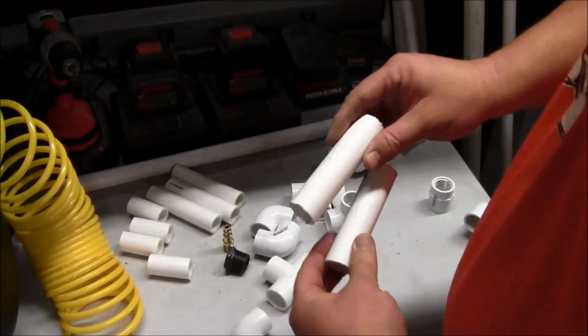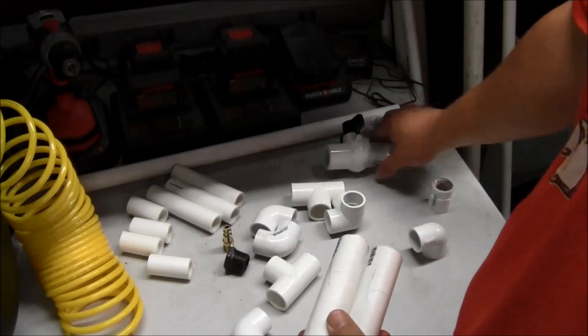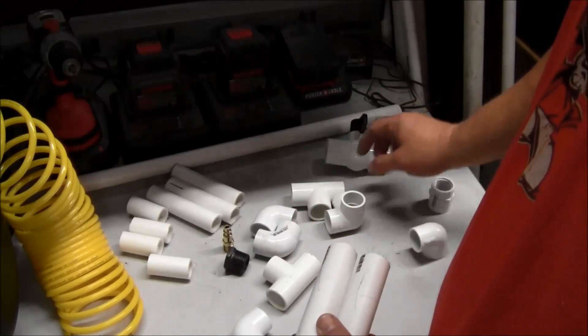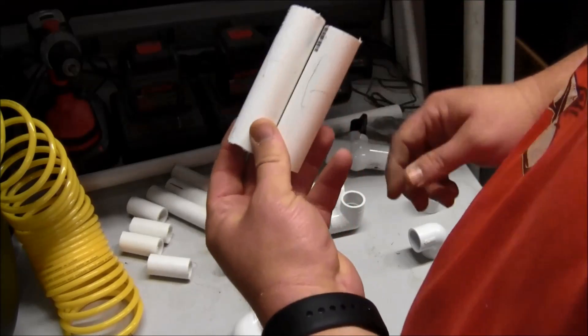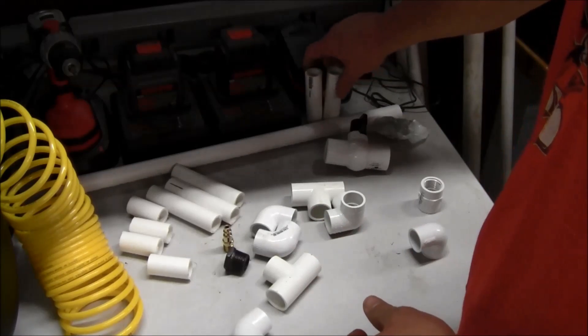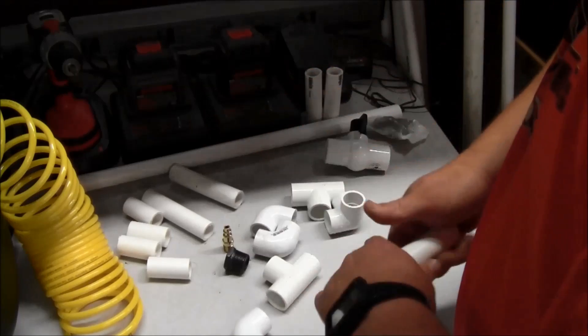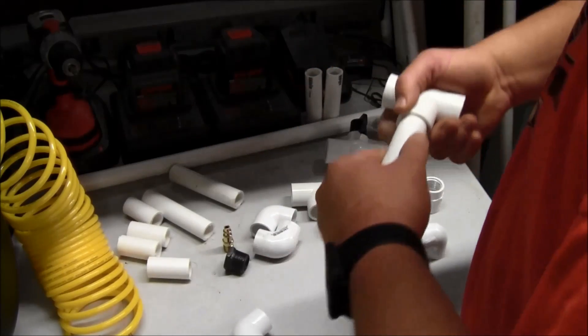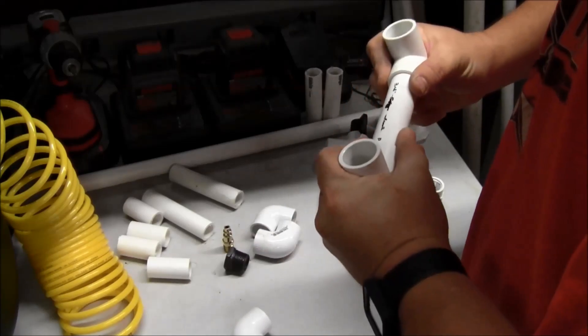Alright, got all the pieces cut. I went ahead and marked the two for the top to go between the elbow at the top, the valve, and my threaded adapter. I didn't measure these, they're just cut to what I thought was a decent length. It doesn't really matter how long they are. So let's go ahead and get these guys down here put together. I'm not going to glue this at first, I'm just going to fit everything together.